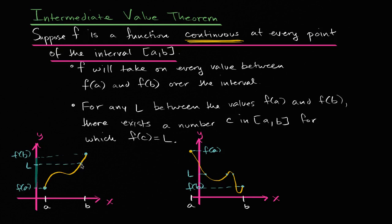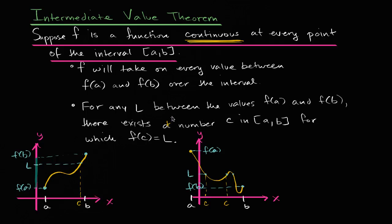There exists at least one c. In the first case that would be our c, and over here there are multiple candidates for c — that could be one c, and that could be another c. So we say there exists at least one number c in the interval for which f of c equals l.